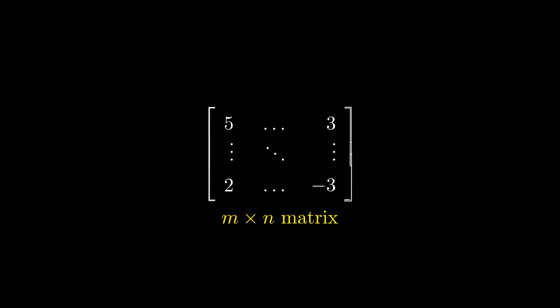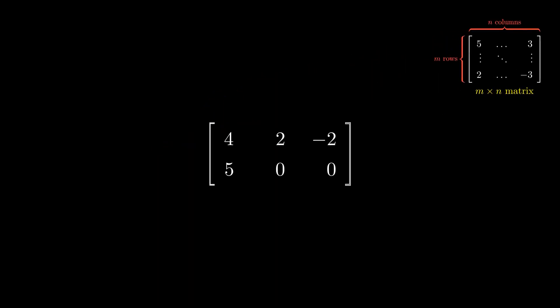We say we have an m by n matrix if the number of rows is m and the number of columns is n. So this matrix here would be a 2 by 3 matrix.